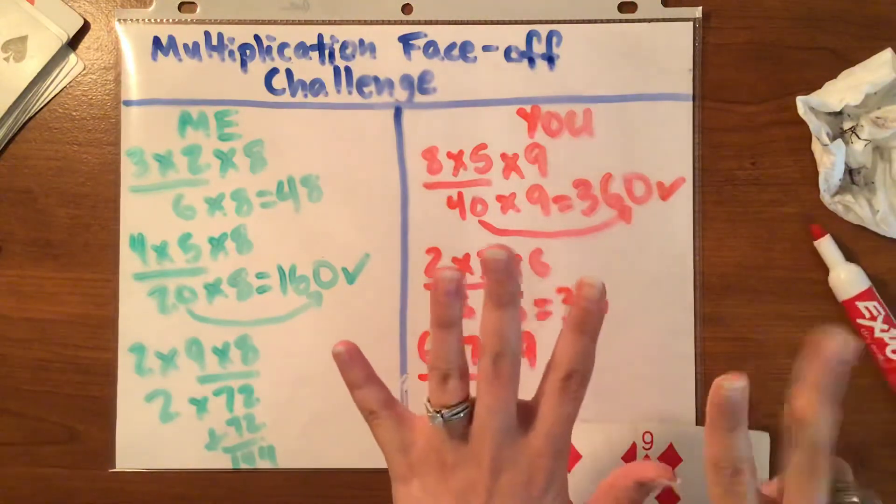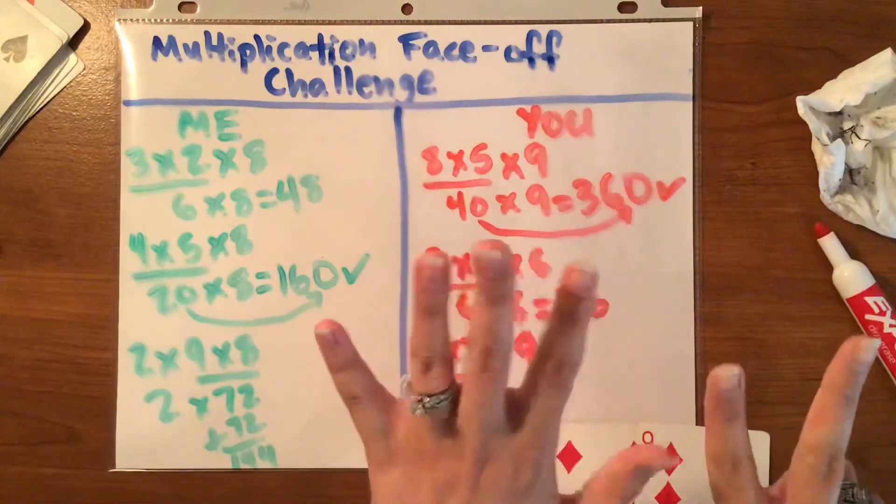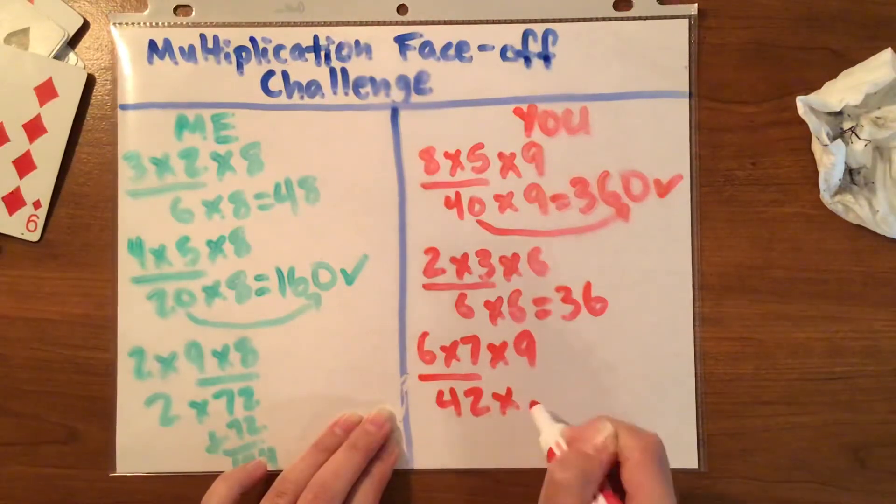Five, ten, fifteen, twenty, twenty-five, thirty, thirty-five. Count them by ones. Thirty-six, thirty-seven, thirty-eight, thirty-nine, forty, forty-one, forty-two. Forty-two times nine.